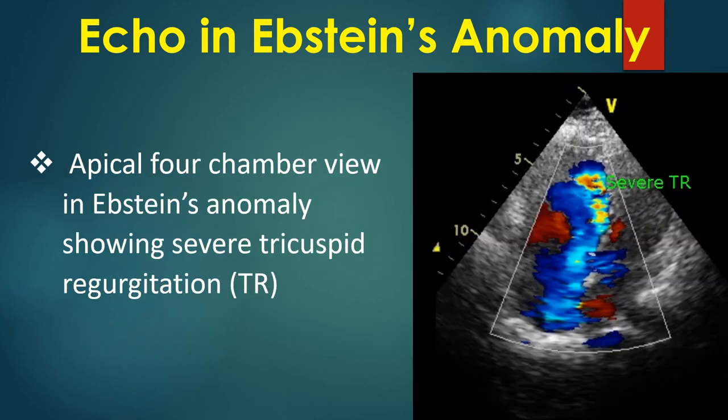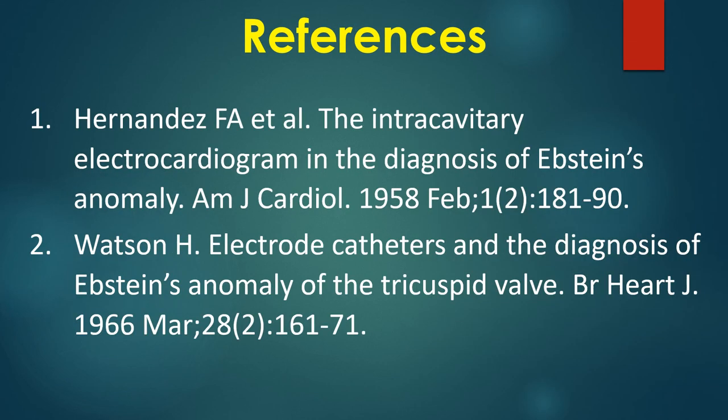Apical 4-chamber view in Epstein's anomaly showing severe tricuspid regurgitation. Here are a couple of journal references.